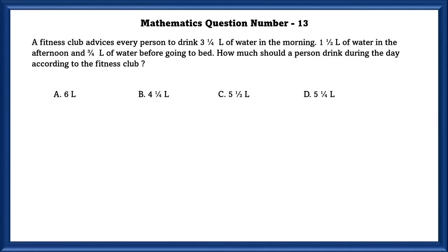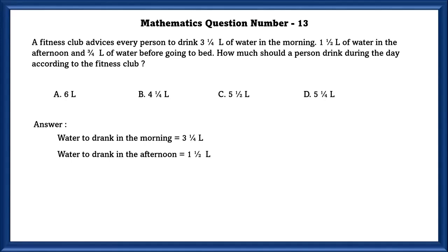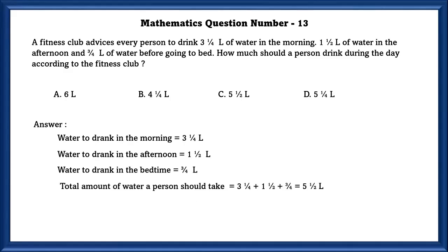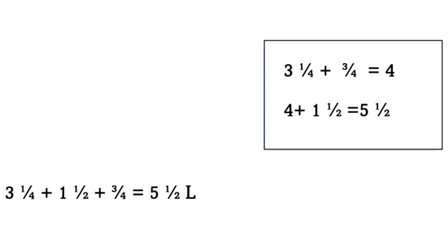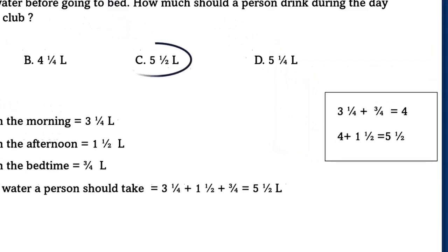Mathematics question number 13. A fitness club advises every person to drink 3¼ litres of water in the morning, 1½ litres in the afternoon, and ¾ litres before going to bed. To find the total water a person should drink during the day, we add all these. 3¼ plus ¾ equals 4, because ¼ plus ¾ equals 1 whole, and 3 plus 1 equals 4. Then 4 plus 1½ equals 5½. So the answer is option C.